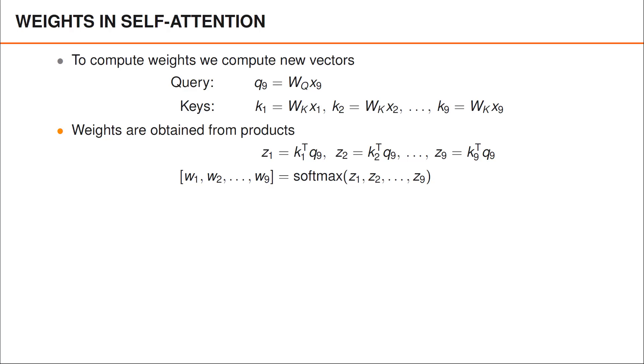When reasoning about these expressions, a simple example to consider is that both WQ and WK are square matrices such that if the original X vectors are 512 elements long, so are the key and query vectors.